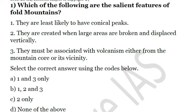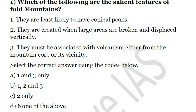The first is clearly wrong because fold mountains do have conical peaks. The second is also wrong — fold mountains are not created where large areas are broken; they are created where large folds form due to the merging of two plates. For example, the Himalayas and Alps are fold mountains. Mountains created by large areas being broken are called block mountains, not fold mountains. The third statement is also wrong — it is not necessary that volcanism must be associated with the mountain core or its vicinity. For example, the Aravalli range is an old fold mountain with no volcanism associated with it.